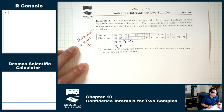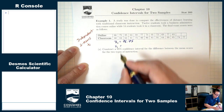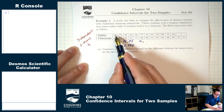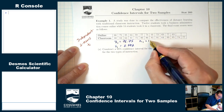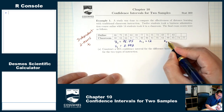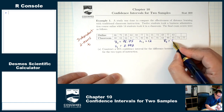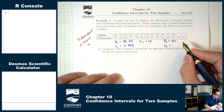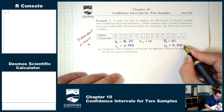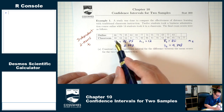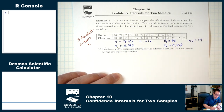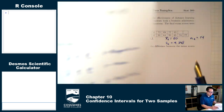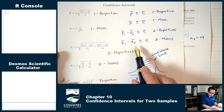X1-bar, the mean for online, was 76.75. S1, the standard deviation for online rounded to three decimal places, is 8.572. N1, the sample size for online, is 12. X2-bar, the mean for classroom, was 80. S2, the standard deviation for classroom, is 9.348. N2, the sample size for classroom, is 14. Now we're ready to construct our confidence interval.